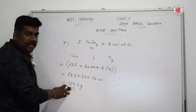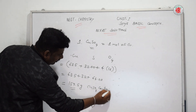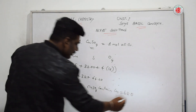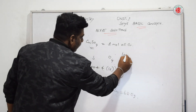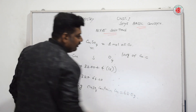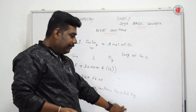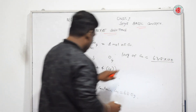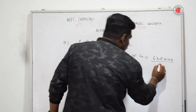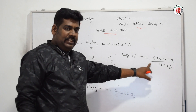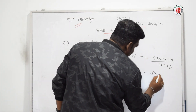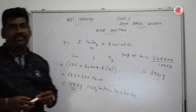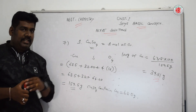Therefore, 100 grams of CuSO₄ contains = 63.5 ÷ 159.5 × 100 = approximately 39.81 grams of copper. This is the amount of copper that can be obtained from 100 grams of copper sulfate. Let us go to the next question.